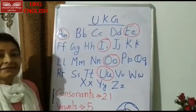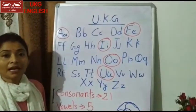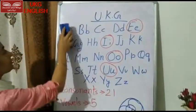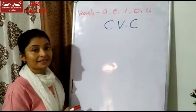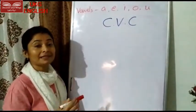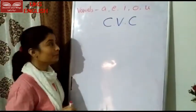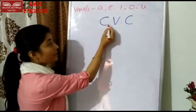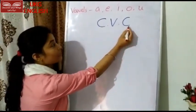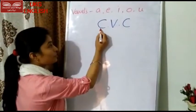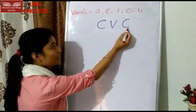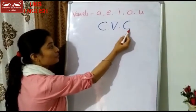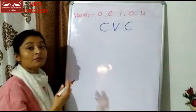Now, what is CVC words? CVC words क्या होते हैं? I will tell you. What is the meaning of CVC? C stands for consonant, V stands for vowel, C stands for consonant — consonant, vowel, consonant.